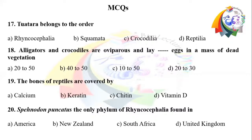Question number 19: The bones of reptiles are covered by. Option A: calcium. Option B: keratin. Option C: chitin. Option D: vitamin D. Question number 20: Sphenodon punctatus, the only member of Rhynchocephalia, found in. Option A: America. Option B: New Zealand. Option C: South Africa. Option D: United Kingdom.